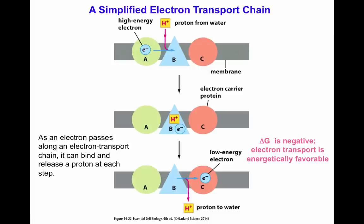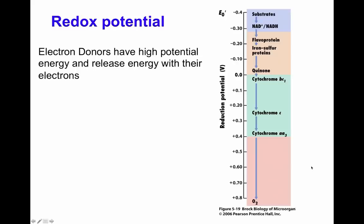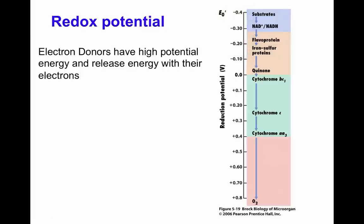Let's take a moment to look more closely at redox potentials. This image shows what is called the Reduction Potential Tower — a way to visualize all the molecules involved in respiration or photosynthesis, putting them in order of their redox potential. The more negative the redox potential, the better that molecule is at donating electrons. Electron donors have high potential energy and release that energy when releasing their electrons. Some of that energy can be used to transfer protons across the membrane, and some may be lost as heat.